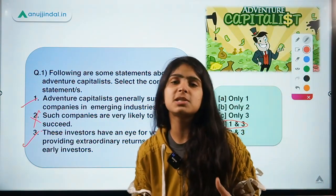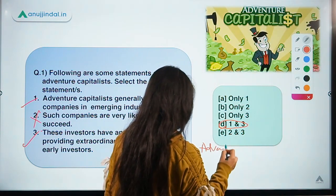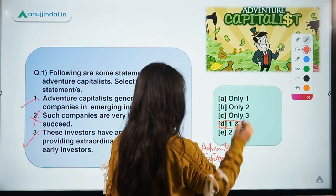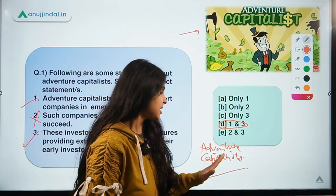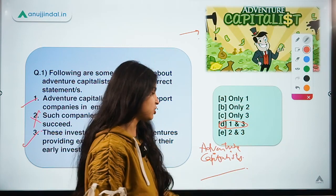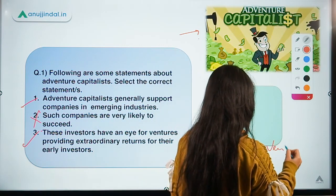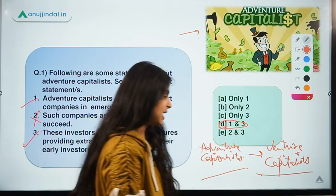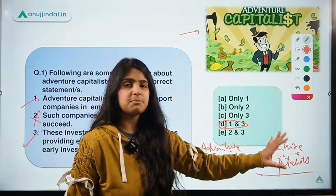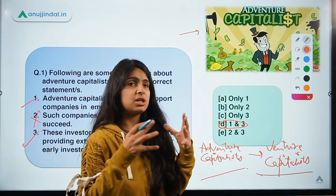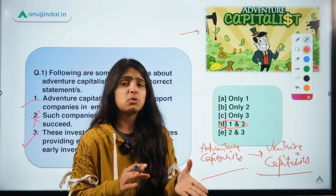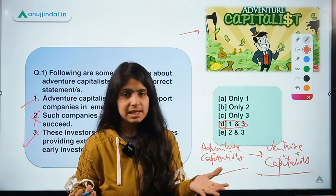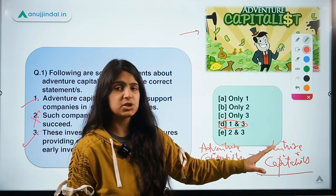First, talking about this term called Adventure Capitalist. If we remove 'ad' from adventure, it becomes Venture Capitalist, which is the main word. A venture capitalist is an entity or business that invests in new businesses, sees potential in young companies, provides financial resources to help them grow, and later sells them off at a profit.